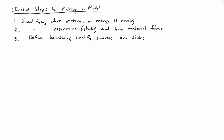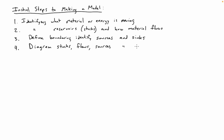In one version we had stocks of carrots and rabbits, with material flowing via birth. In the two examples we chose different boundaries — one where we had a source for carrots and another where we just had an infinite reservoir. So we defined the boundaries differently in those two examples. The next step would be to draw it out: diagram the stocks, flows, sources, and sinks.